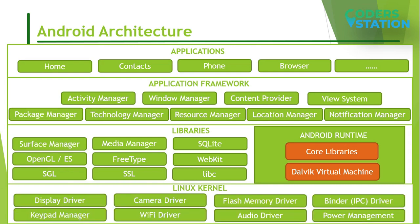Last layer is Linux kernel. Linux kernel is the heart of Android architecture. It manages all the available drivers such as display driver, camera driver, Bluetooth driver, audio drivers, memory driver etc. which are required to run the device. Linux kernel provides an abstraction layer between the device hardware and other components of Android architecture. It is responsible for management of memory, power, devices etc.